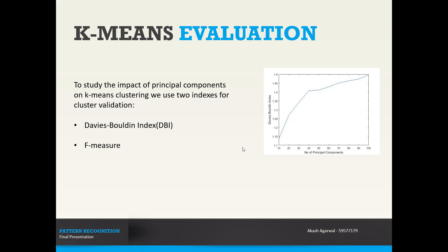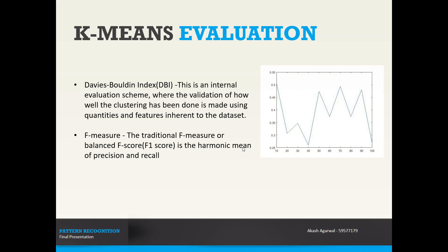We also evaluate our k-means clustering algorithm by two cluster validation indices. The first is Davies-Bouldin index, and the second is F-measure. Davies-Bouldin index is an internal evaluation scheme where the validation of how well the clustering algorithm has been done is made using quantities and features inherent to the dataset. On the other hand, the F-measure is the harmonic mean of precision and recall. The higher the value of F-measure, the better our validation indexes, and the lower the value of Davies-Bouldin index, the better our algorithm is.